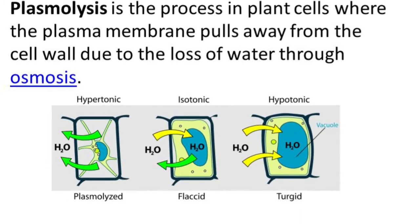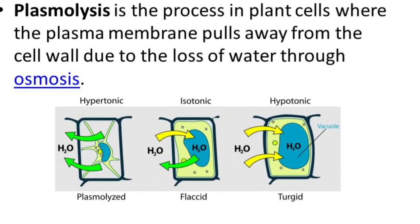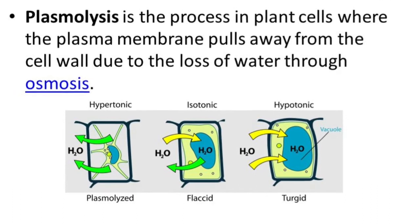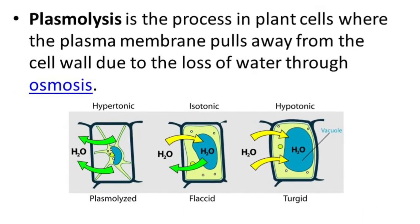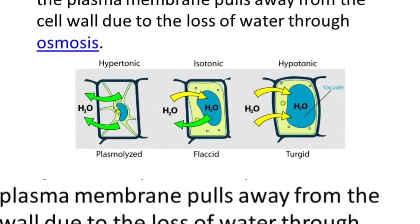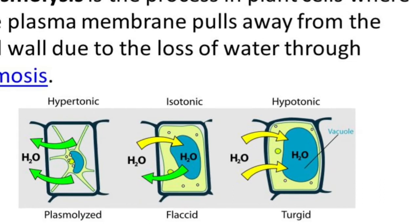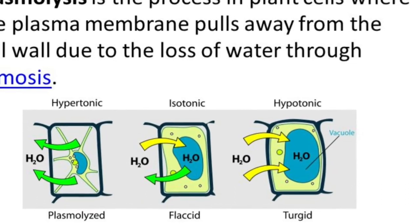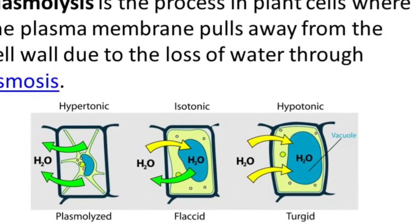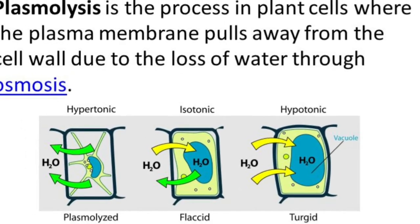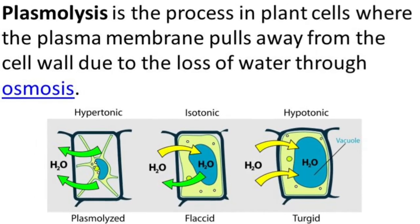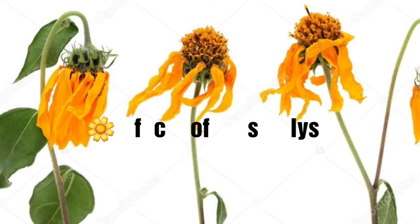Plasmolysis is the process in plant cells where the plasma membrane pulls away from the cell wall due to loss of water through osmosis. You can see that the cytoplasm starts shrinking further and further in the hypertonic solution.